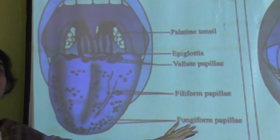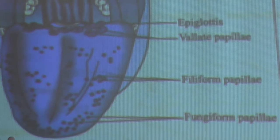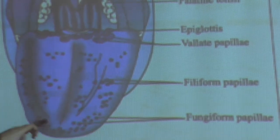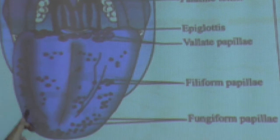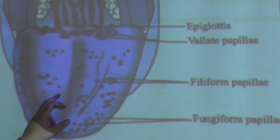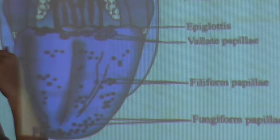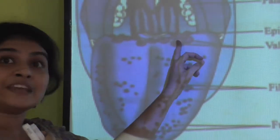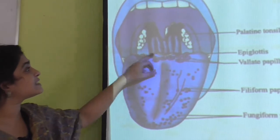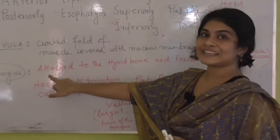There are three types of papillae. The vallate papillae are the largest and are present near the base of the tongue — you can easily see them when you open your mouth in front of a mirror. The filiform papillae are present in the two-thirds of the tongue just behind the vallate papillae. The fungiform papillae are present in the anterior part of the tongue.